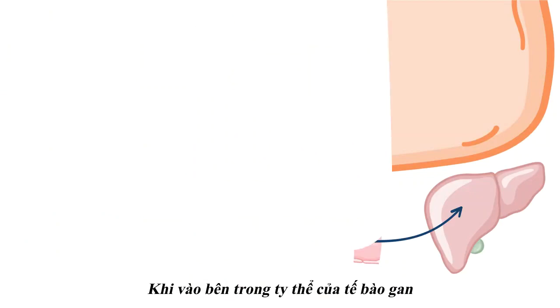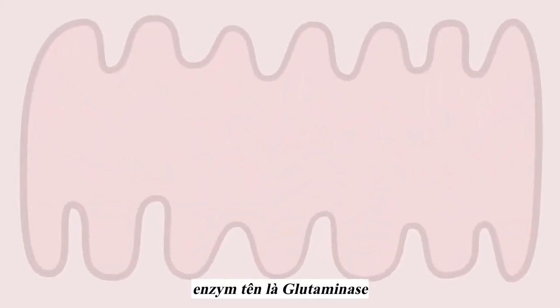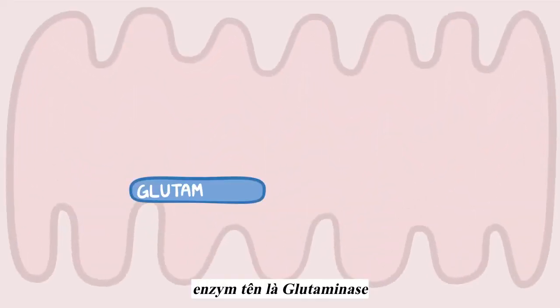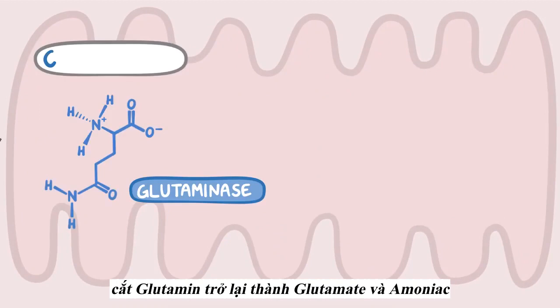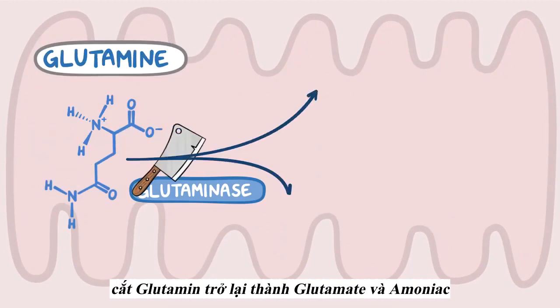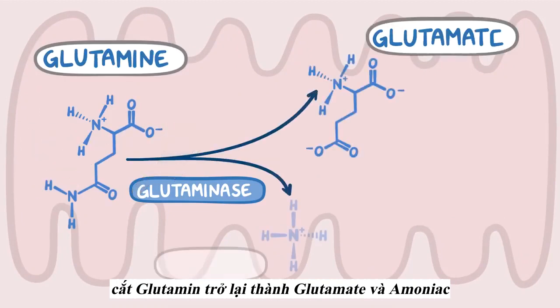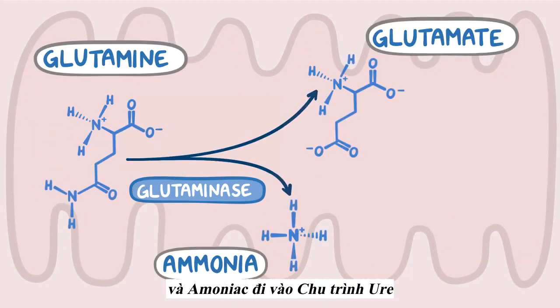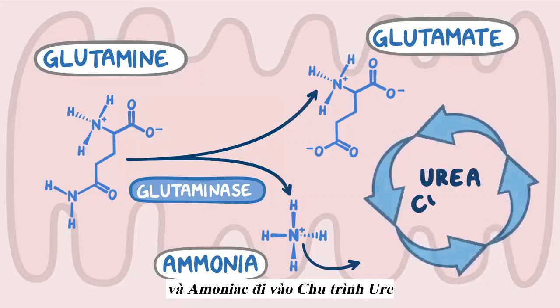Once inside the mitochondria of a liver cell, an enzyme called glutaminase cleaves glutamine back into glutamate and ammonia, and the ammonia can then enter the urea cycle.